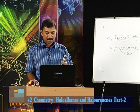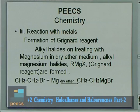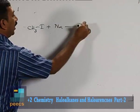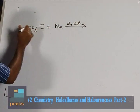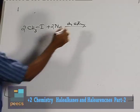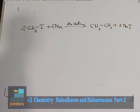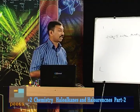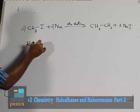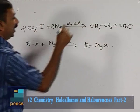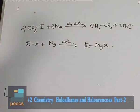Reactions with metals: alkyl halides treated with sodium metal in dry ether medium undergo the Wurtz reaction. For example, two molecules of methyl iodide react with two atoms of sodium in dry ether to form ethane (CH₃–CH₃) and 2NaI. Higher alkanes are formed this way. Alkyl halides treated with magnesium metal in dry ether medium form alkyl magnesium halide (RMgX), called Grignard's reagent. These are the important reactions of alkyl halides.